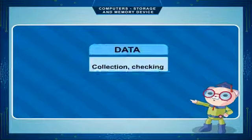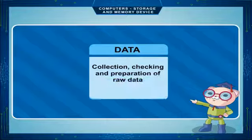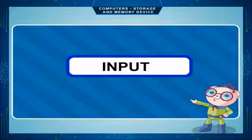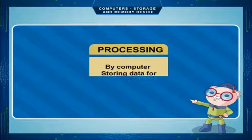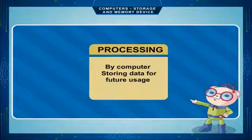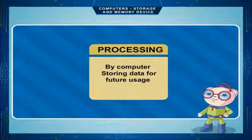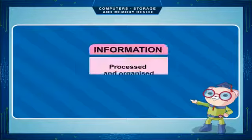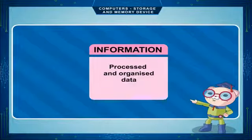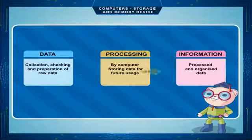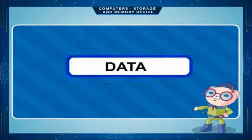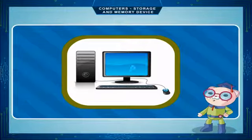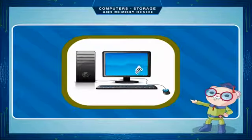The IPO cycle involves data collection, checking, and preparation of raw data, followed by input and processing by the computer, storing data for future usage, and finally producing output — information that is processed and organized data. Raw facts that have been collected but not organized are known as data.